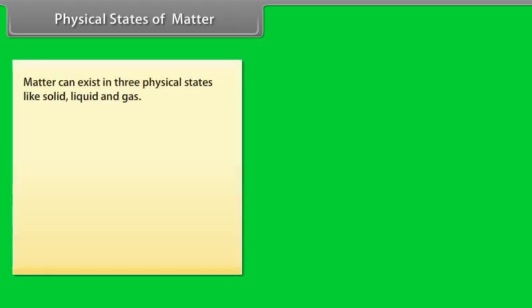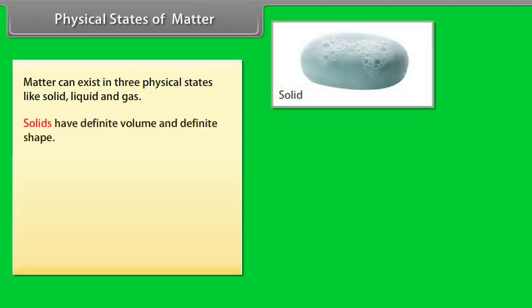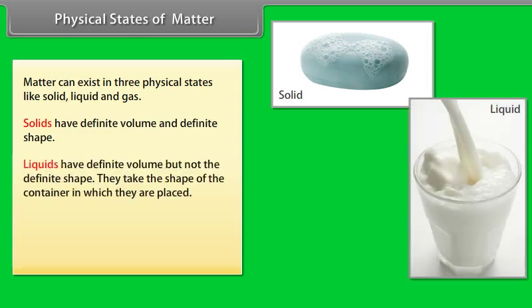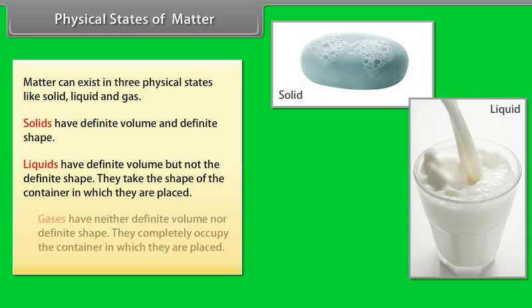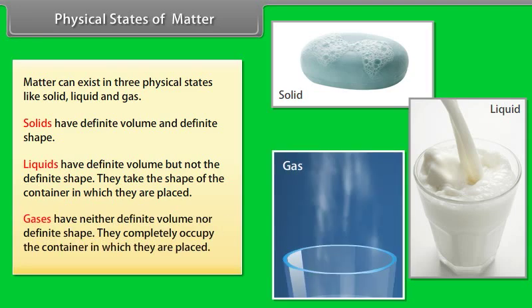Matter can exist in three physical states like solid, liquid and gas. Solids have definite volume and definite shape. Liquids have definite volume but not the definite shape. They take the shape of the container in which they are placed. Gases have neither definite volume nor definite shape. They completely occupy the container in which they are placed.